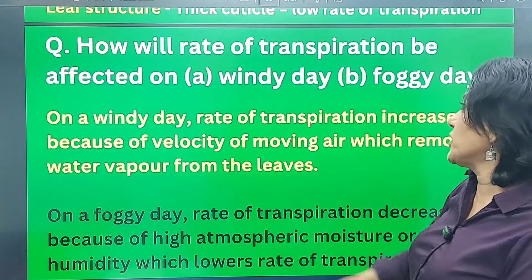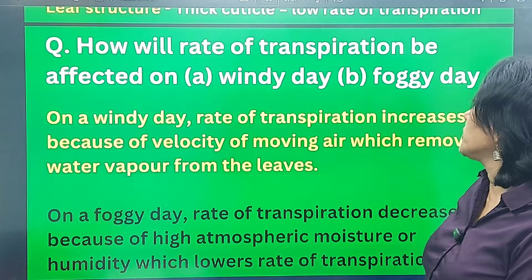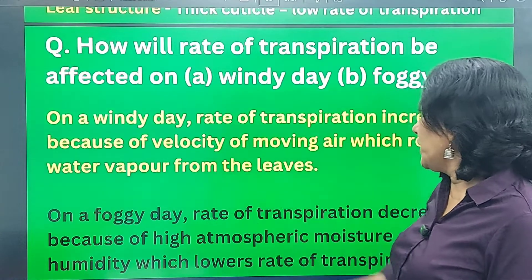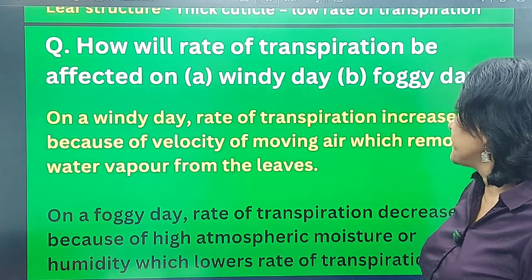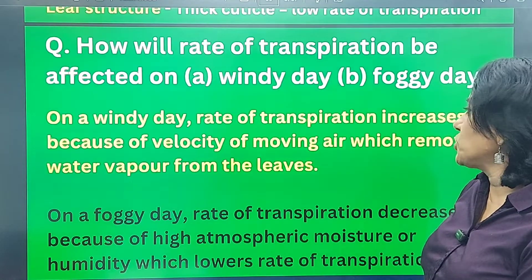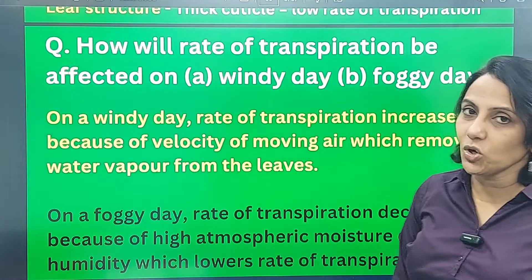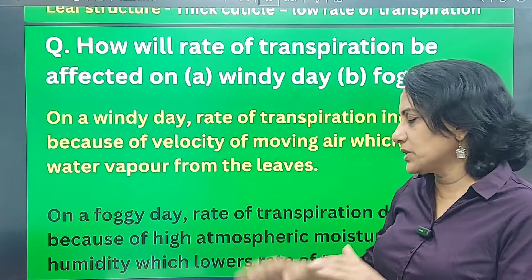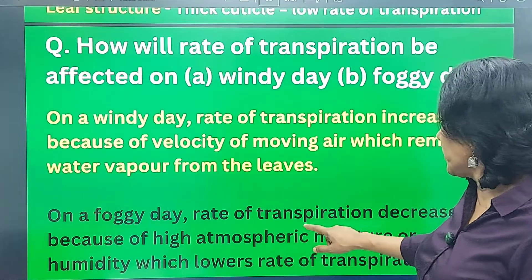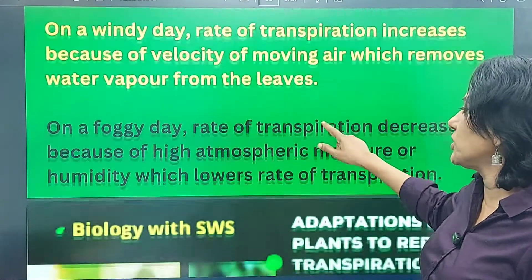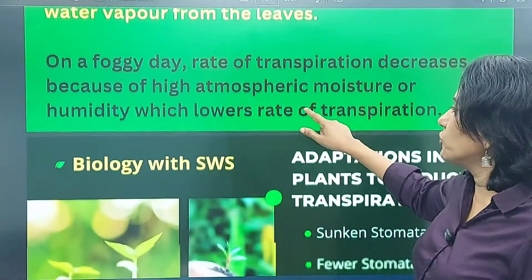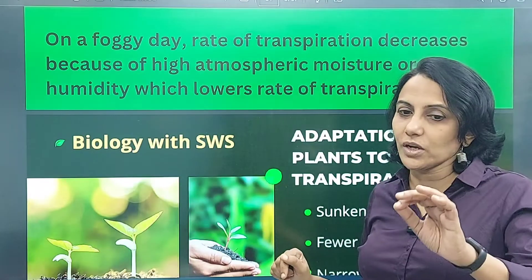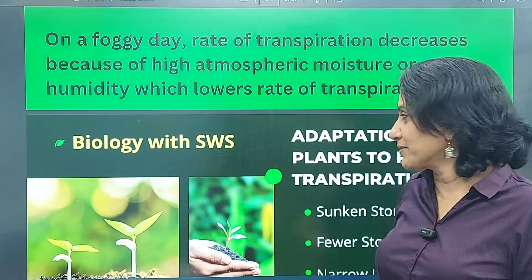On a windy day, the rate of transpiration increases because moving air takes away the water vapor and promotes more diffusion. On a foggy day, the rate of transpiration decreases because of high atmospheric moisture and humidity, which lowers the rate of transpiration.